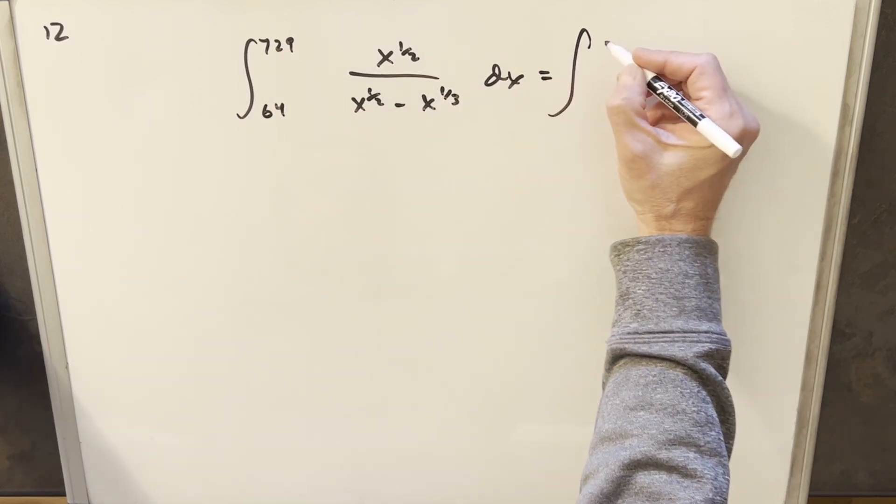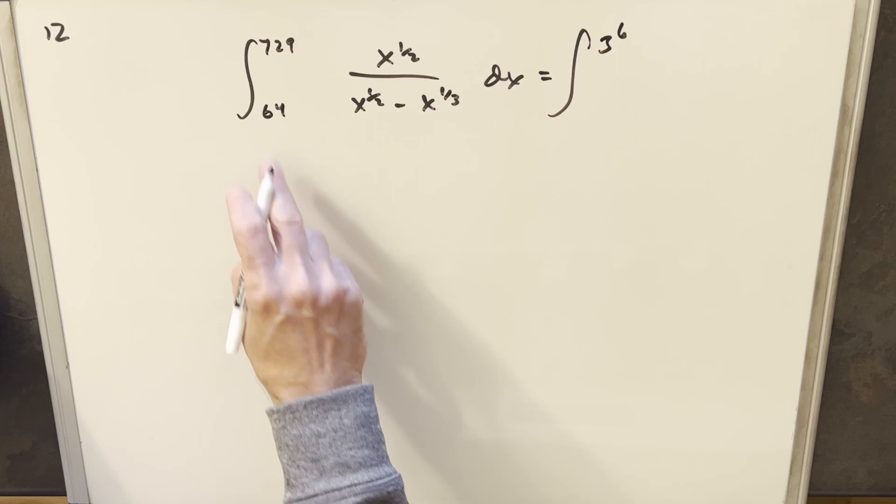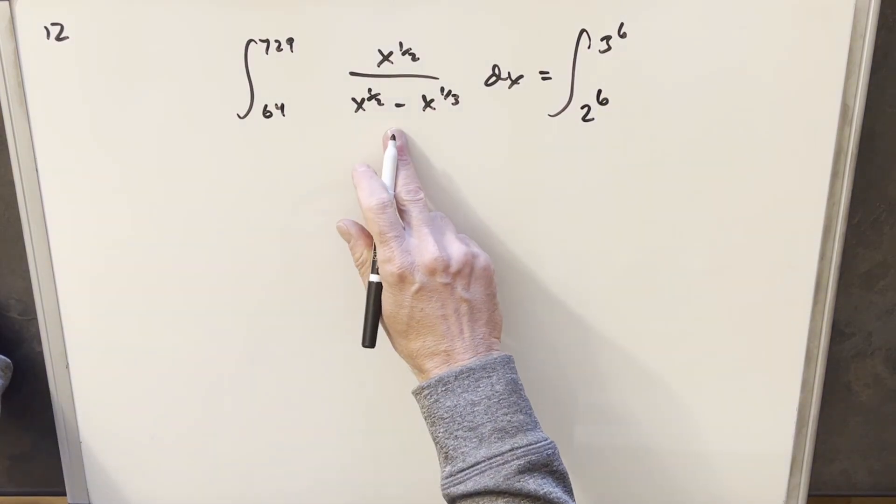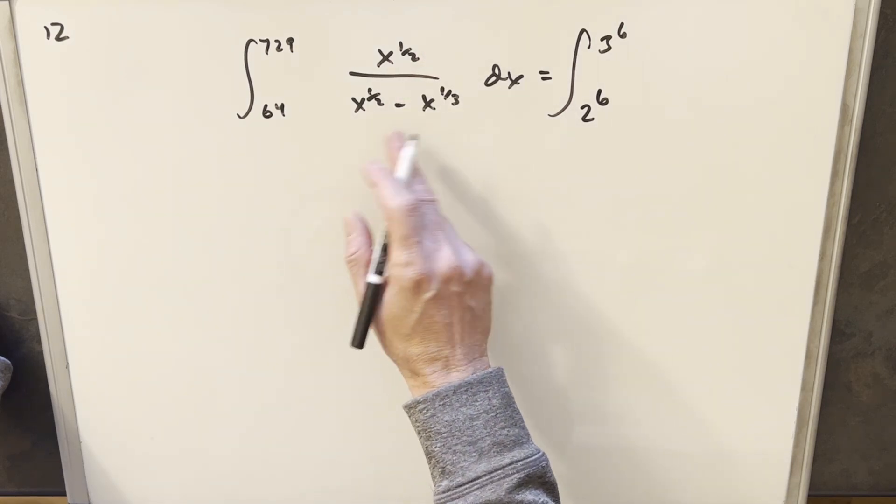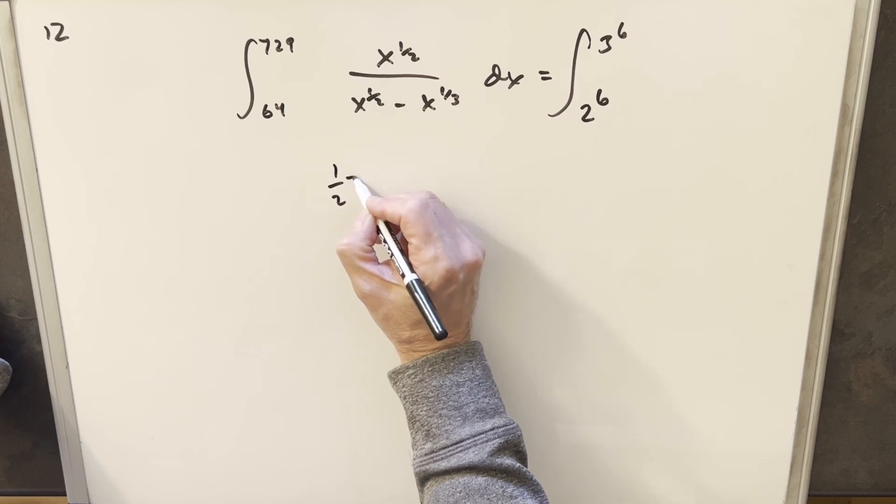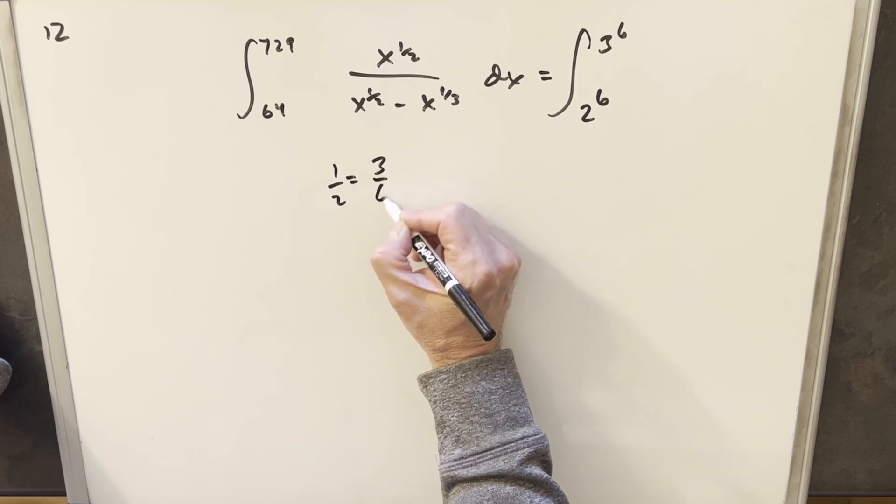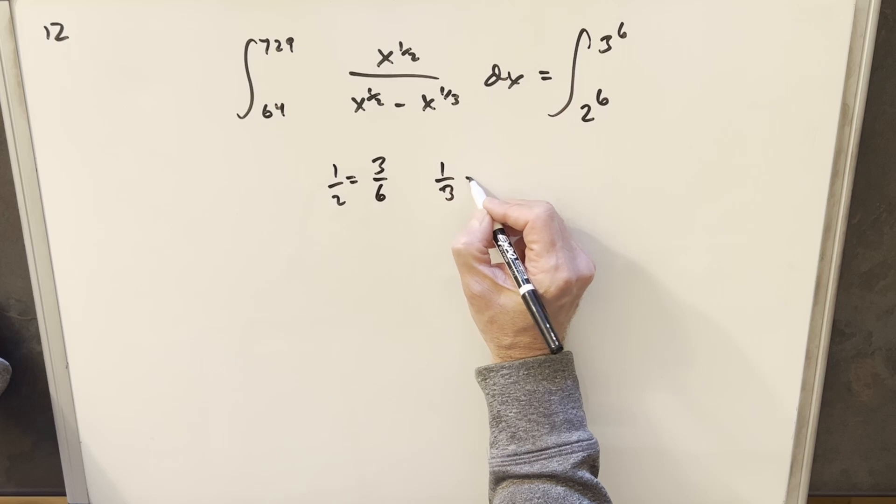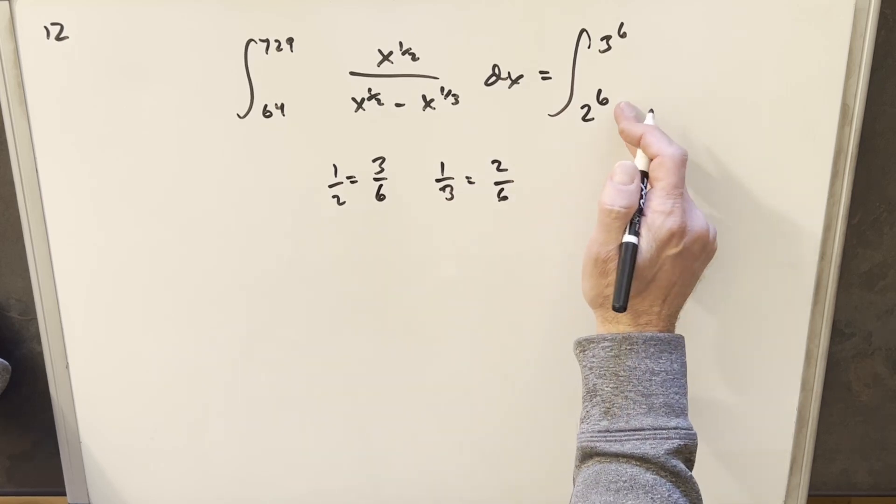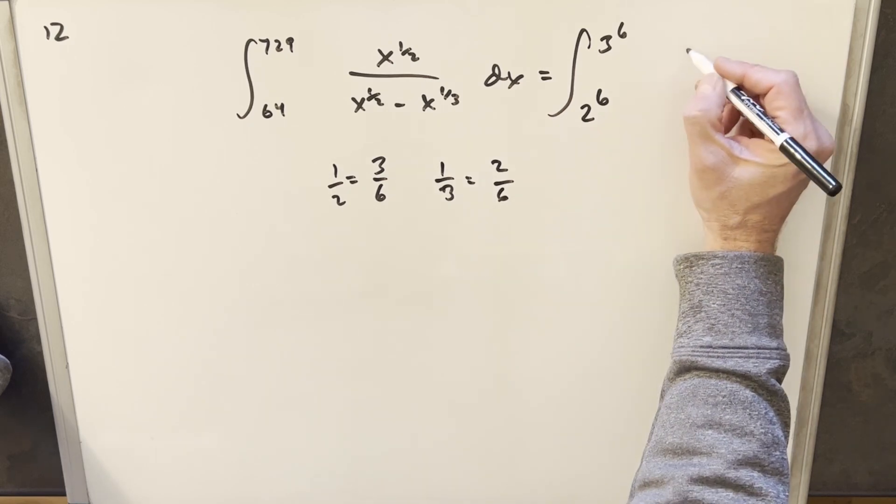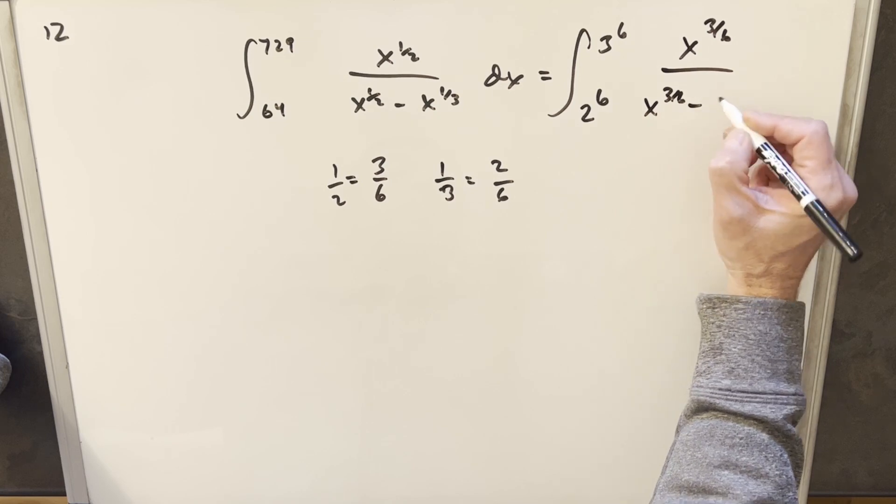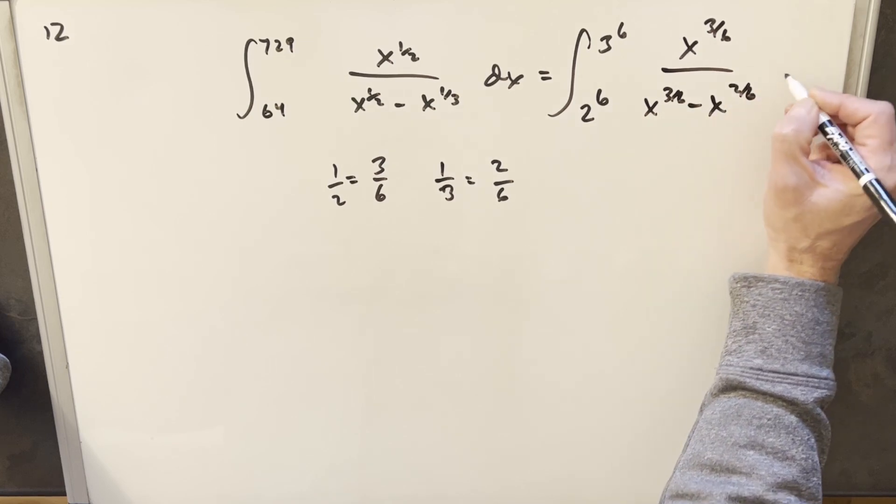So I'll write 729 as 3 to the 6th and 64 as 2 to the 6th. I want a common denominator between all these exponents. We'll notice 1/2 is the same as 3/6 and 1/3 is the same as 2/6. So we'll have 6 as our common denominator and that's nice because we've set our bounds that way. I'm going to write this as x to the 3/6 over x to the 3/6 minus x to the 2/6 dx.